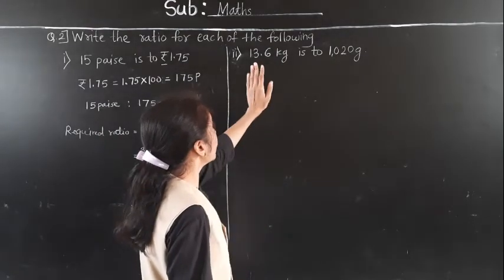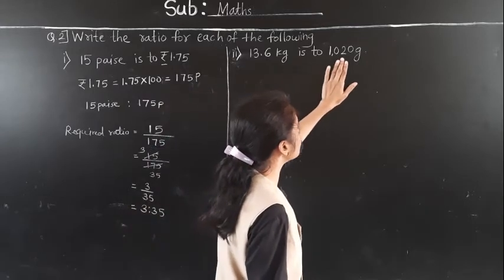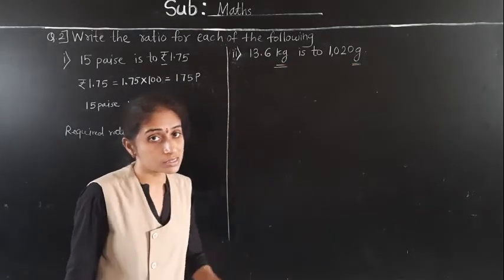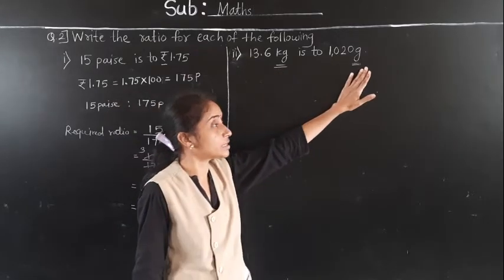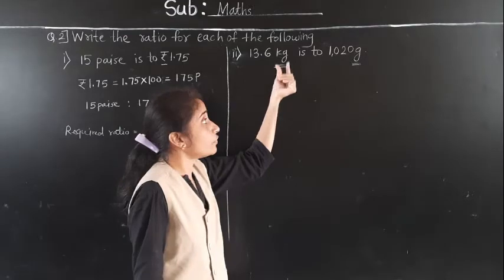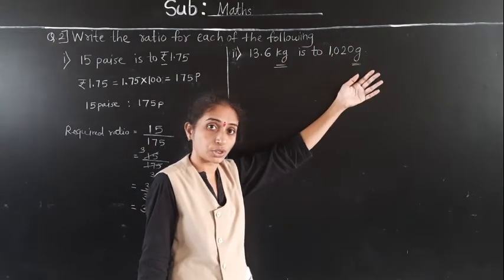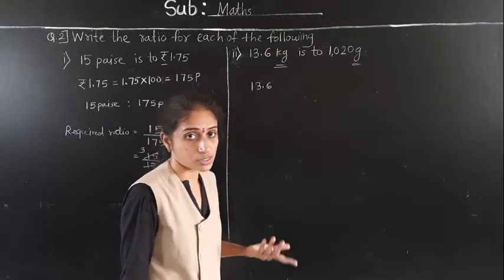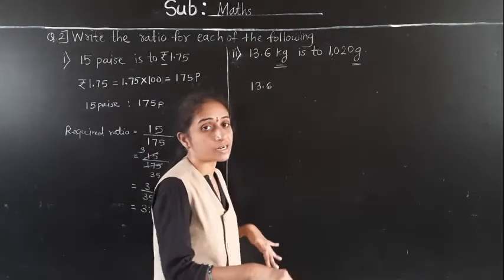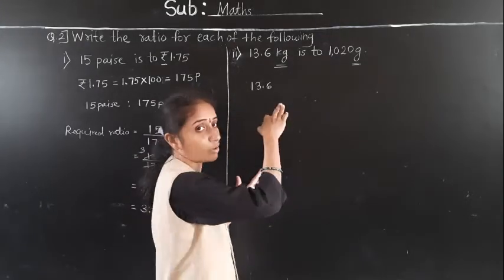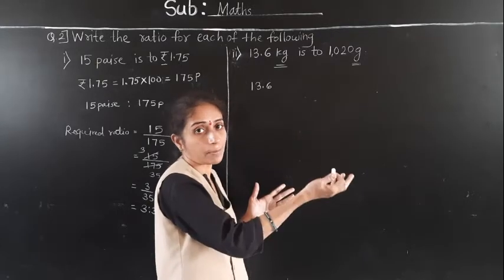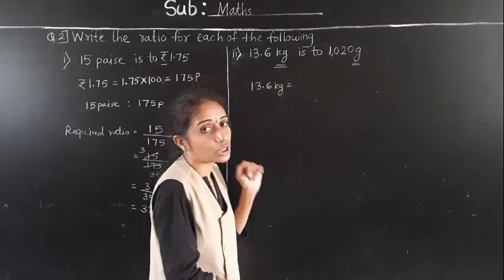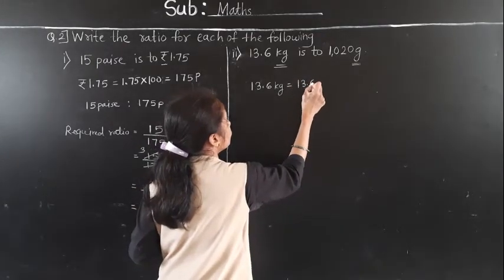Now let us solve the next part: 13.6 kg to 1020 grams. Here it is given in kilograms and here in grams, so let's make the units the same by converting kilograms to grams. One kilogram means one thousand grams. To convert kg to grams, we multiply by 1000.